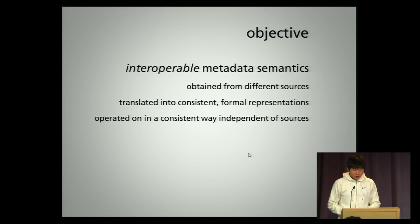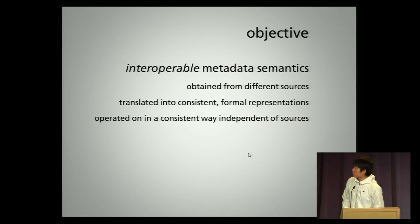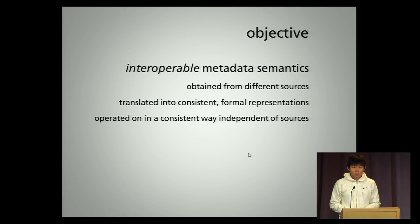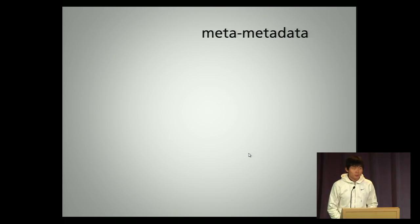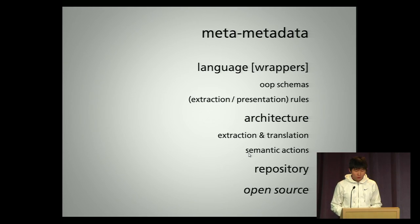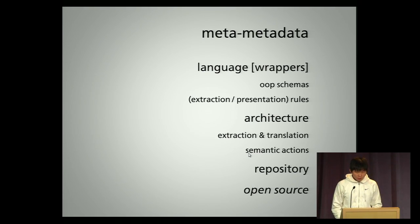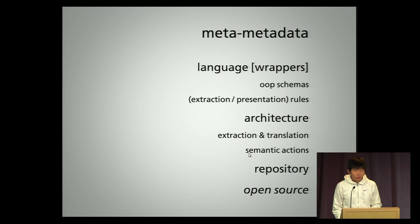Our objective in this work is to implement interoperable metadata semantics, which are obtained from different sources but translated into a consistent representation that you can use directly in your program without knowing the sources. We have software called Meta Metadata, which is a language for authoring wrappers. Wrappers define the metadata schema and extraction or presentation rules. It is also an architecture for extracting and translating metadata semantics from documents to your application, and taking actions on them — basically, actions are operations. It is also a repository of authored wrappers, so you don't have to start from scratch every time. And it is open-source software, so everybody can use it.